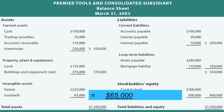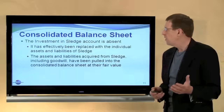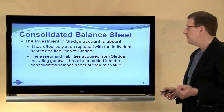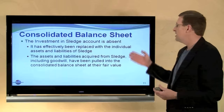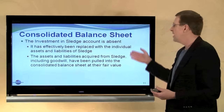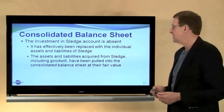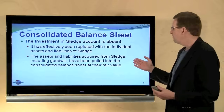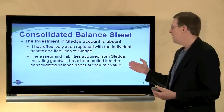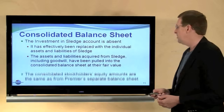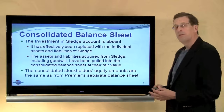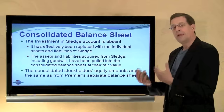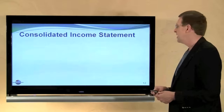The investment in Sledge account is absent from the consolidated balance sheet — it was effectively replaced with the assets and liabilities of the subsidiary. The assets and liabilities acquired from Sledge, including its goodwill, have been pulled into the consolidated balance sheet at their fair value. The consolidated stockholders' equity matches that of the parent, which implicitly incorporated its investment activity.